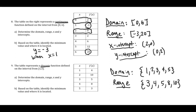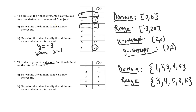I want to point out an omission from problem 8: because it's a continuous function, there should be a second X-intercept. The Y values went from positive to negative, so there had to be an X-intercept in that transition. We can approximate it as (0.5, 0).